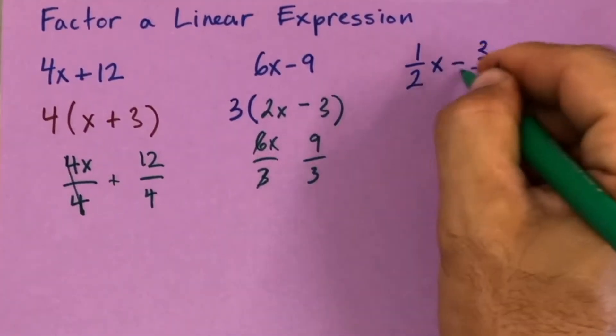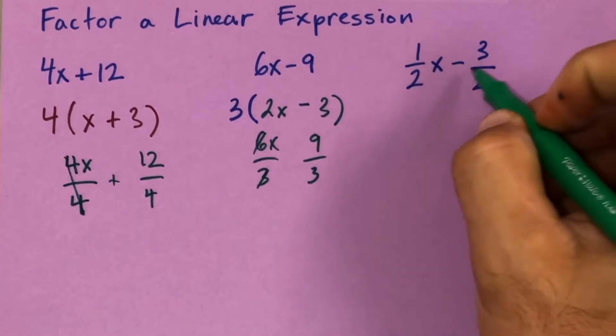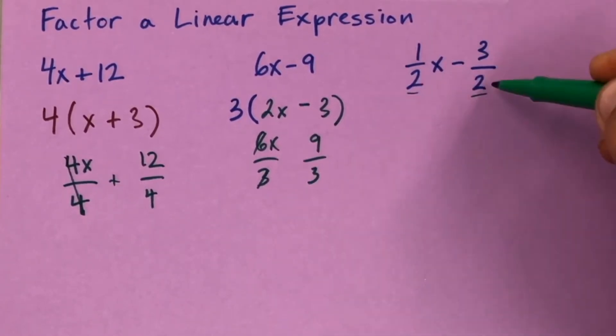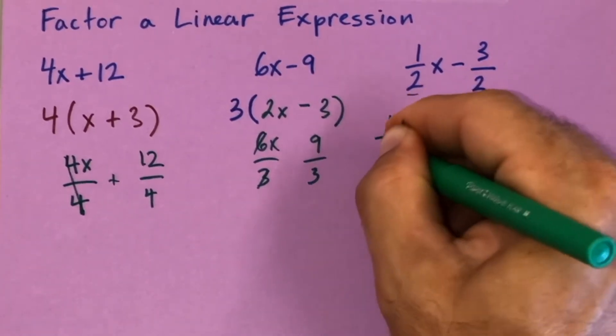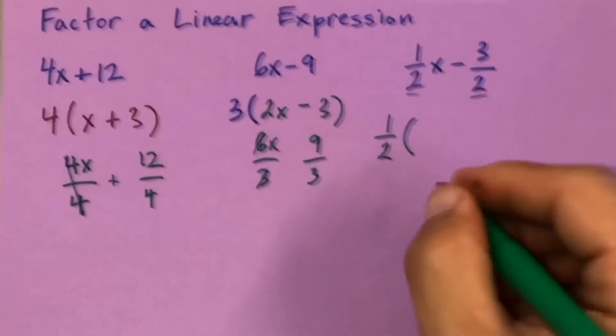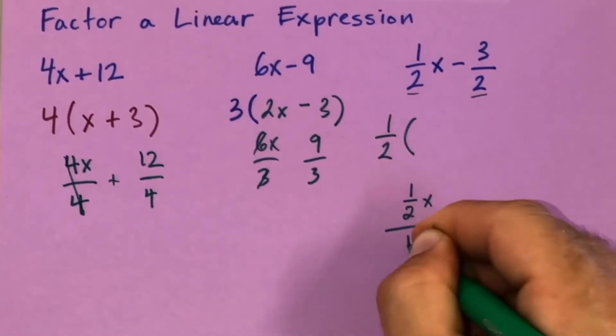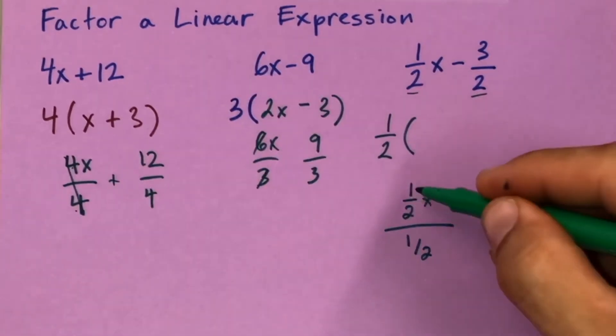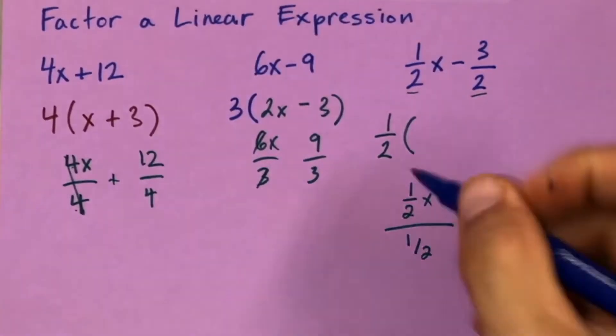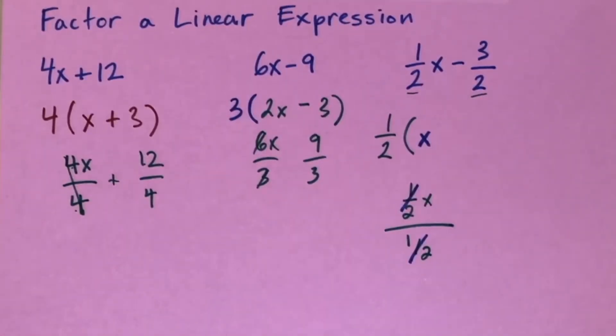Another one you want to look at is maybe one where they give you a fraction. Since this denominator matches up, you know that one half could be a factor of three halves, so I'm going to factor out the one half. Now if I did one half x over one half, just like this problem with the 4 factored out, this one half is going to factor out leaving us with x.